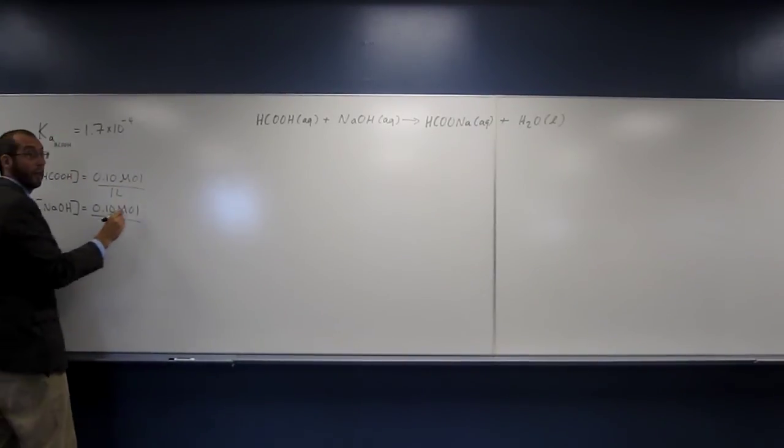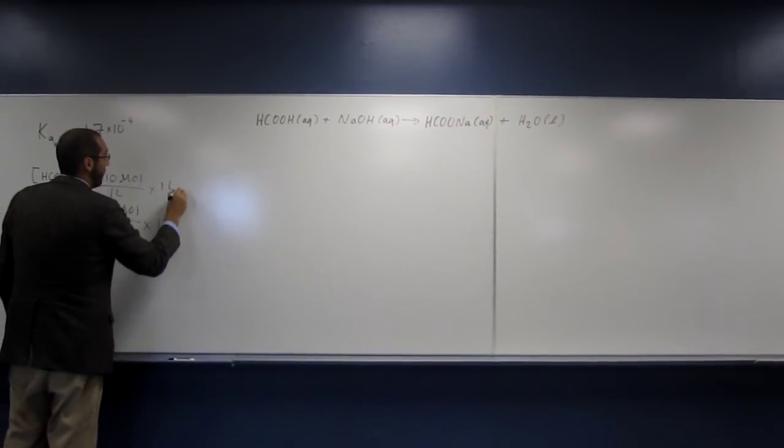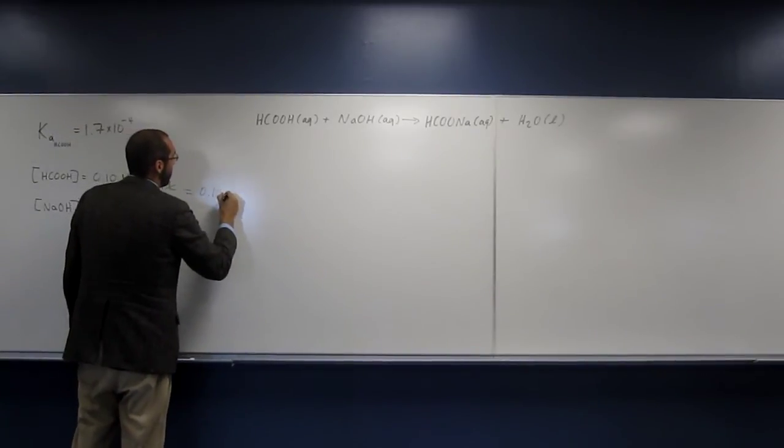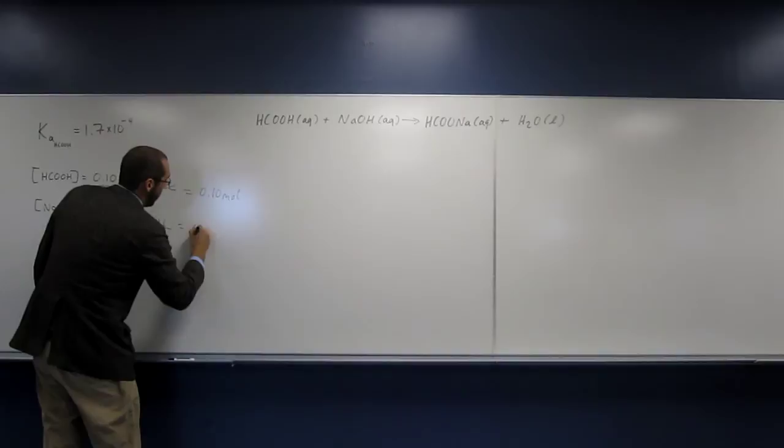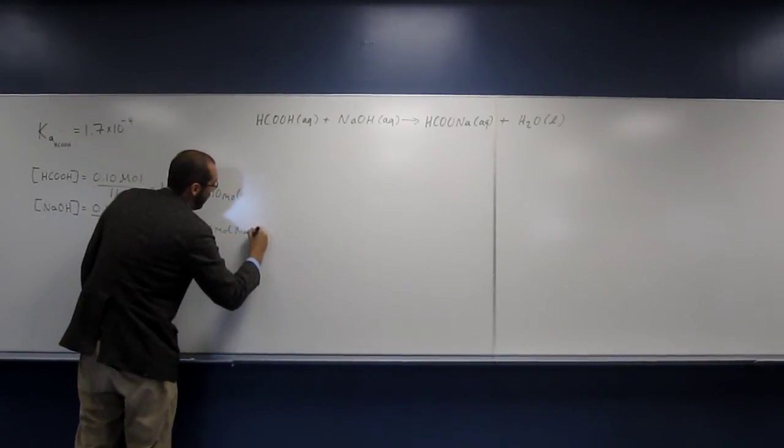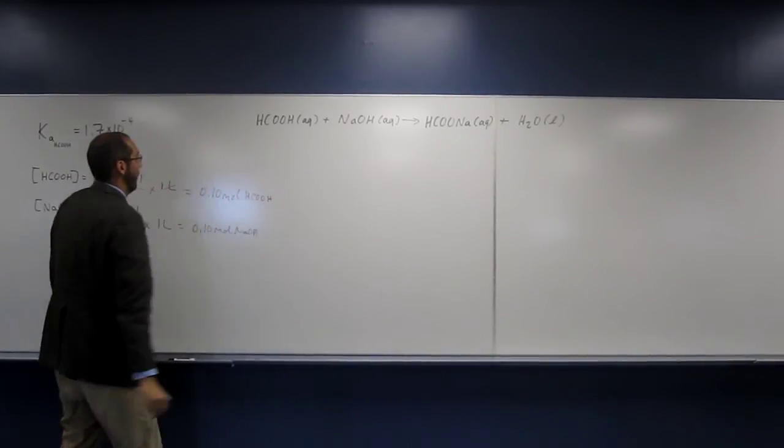So remember we said that if you want to write it out, if we have 1 liter of each of these solutions, we can figure out the number of moles. It's going to be 0.10 moles of that, and 0.10 moles.